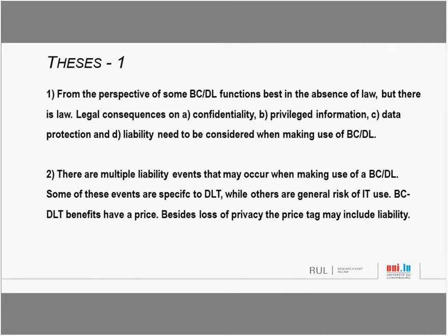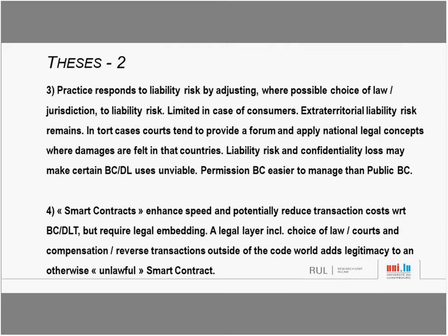There are ways to respond to these liability risks - we can adjust choice of law, the contractual scheme, and assign functions to certain parties - with the exception that when consumers are involved, this is not so easy. These liability risks make blockchain not the technology of choice for certain use cases, and permissioned blockchains may be easier to handle than public blockchains. As to smart contracts, they are very efficient in enhancing speed and potentially reducing transaction costs, but they only work smoothly when soundly embedded in the applicable legal environment - a legal layer including choice of law is needed to hold up the legitimacy of an otherwise lawful smart contract.